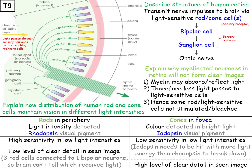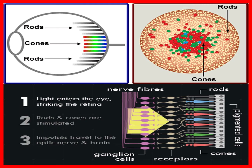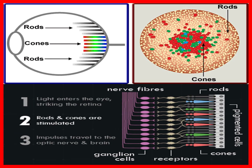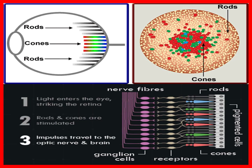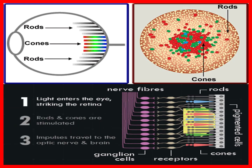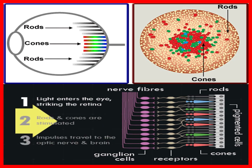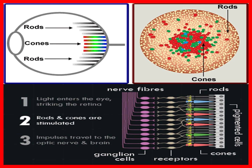Cones have lower sensitivity in dim light because more light energy is required to bleach iodopsin compared to rhodopsin. The cone cells are densely packed and centrally located in the fovea, giving high acuity. Rod cells are distributed in the periphery, with typically three rod cells linked to one bipolar cell, reducing acuity but increasing sensitivity in dim light - the brain cannot determine which rod cell was stimulated, so the detailed image is less clear.